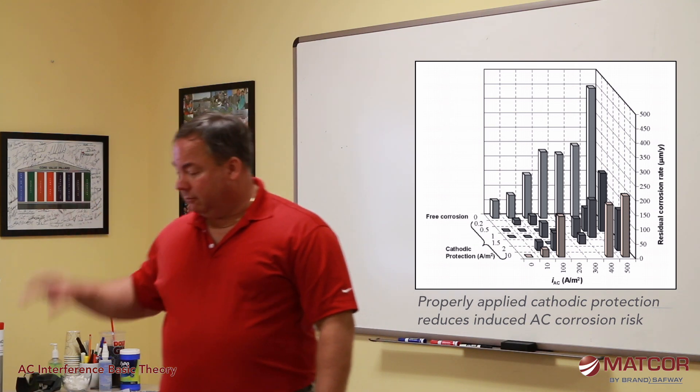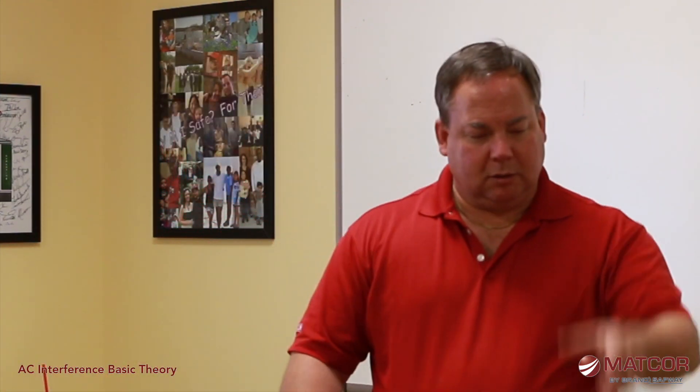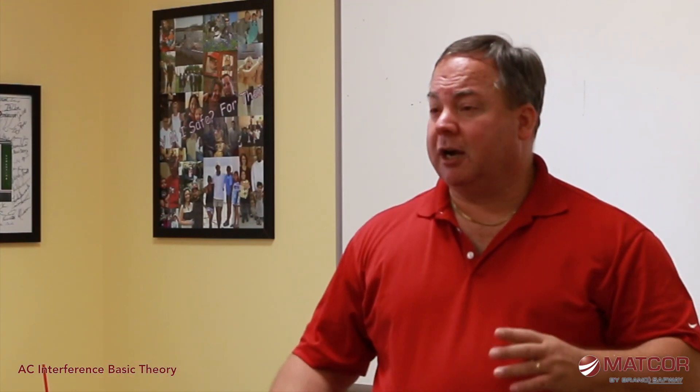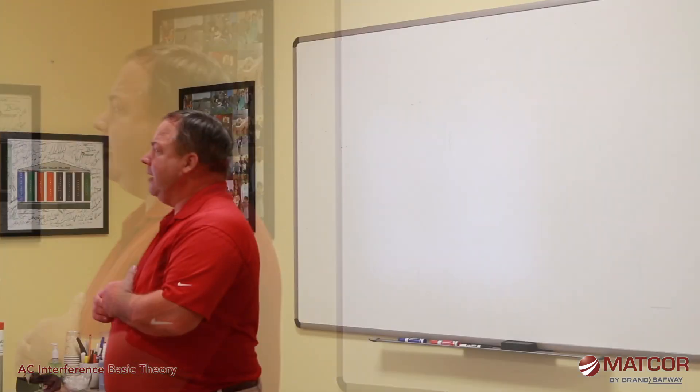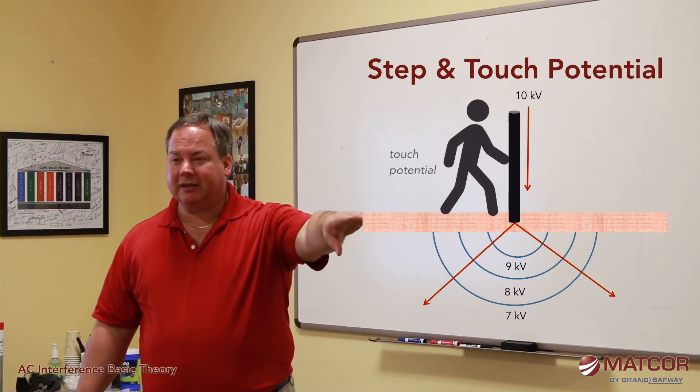The third threat of AC on pipelines is that you're picking up voltage on the pipeline, and at various locations the pipeline has appurtenances — valve stems, test stations — things that come above ground that somebody can touch. If the pipeline has accumulated a lot of voltage and someone touches a valve station or similar structure, they can get shocked — or even seriously hurt. We call that step and touch potential.